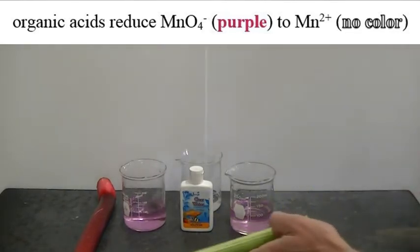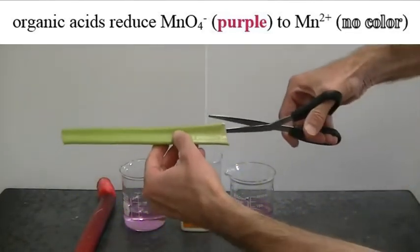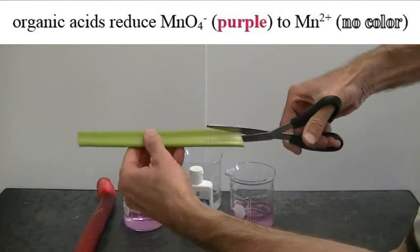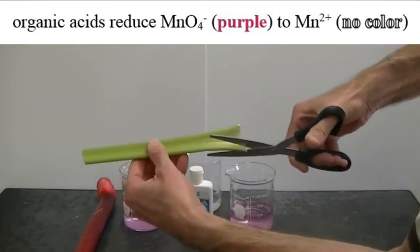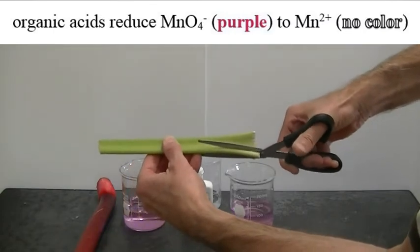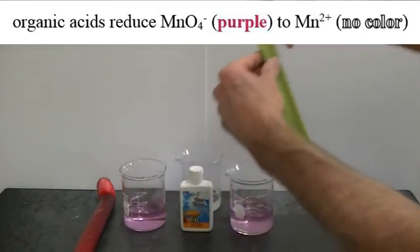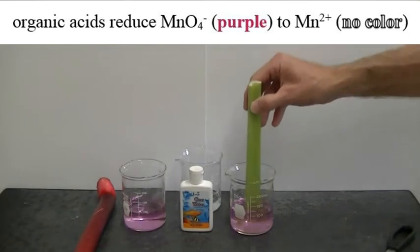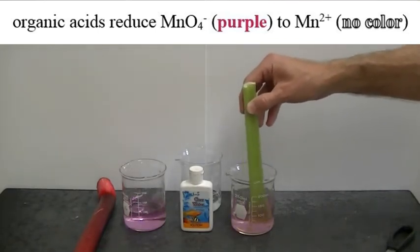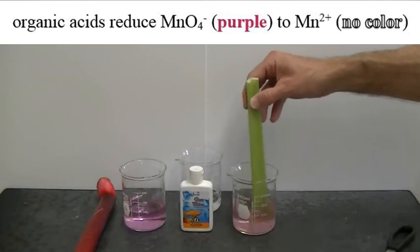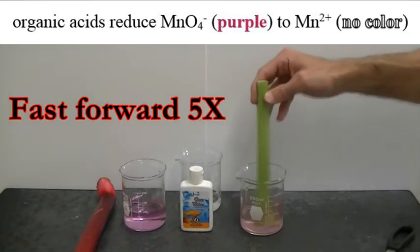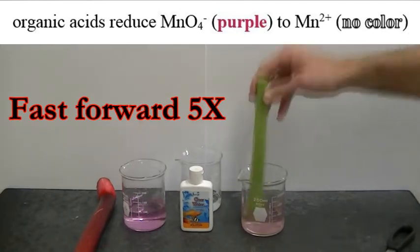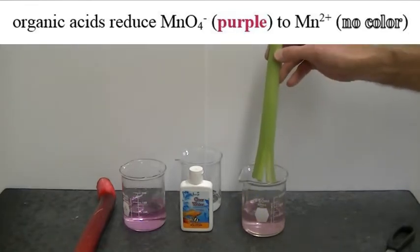Now first, I'll take this stalk of celery and I'm going to cut it three times lengthwise. And the reason why I'm doing that is because I want the contents of the celery stalk to be able to mix very well with the potassium permanganate solution. And I'll just stir the celery stalk into the solution of potassium permanganate. I see a slight color change.